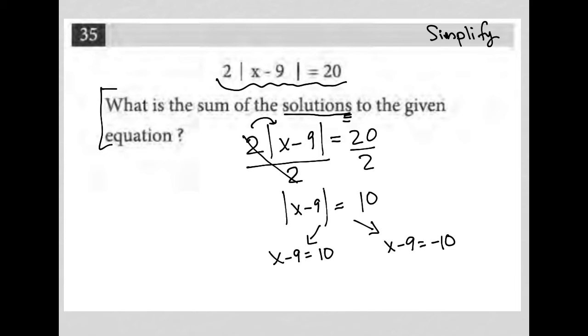So we have x minus 9 equals 10, which is kind of how it looked initially without the absolute value. And then we have also x minus 9 is equal to negative 10. The reason for this is if the stuff in here, x minus 9,